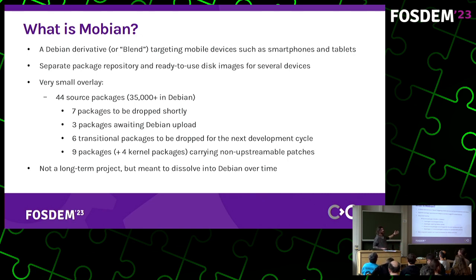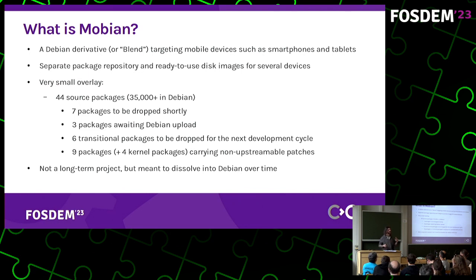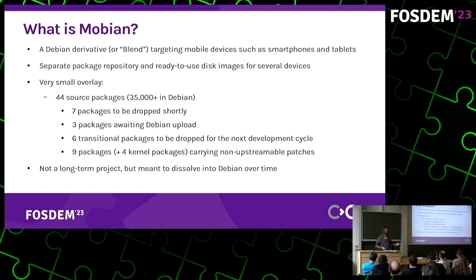We have some transitional packages, and the most difficult to get rid of will be device support packages where we have downstream patched kernels. But in the end, Mobian isn't supposed to be a long-term project. It's really supposed to be merged into Debian itself, just improving the overall Debian ecosystem rather than being a standalone project aimed solely at mobile users.